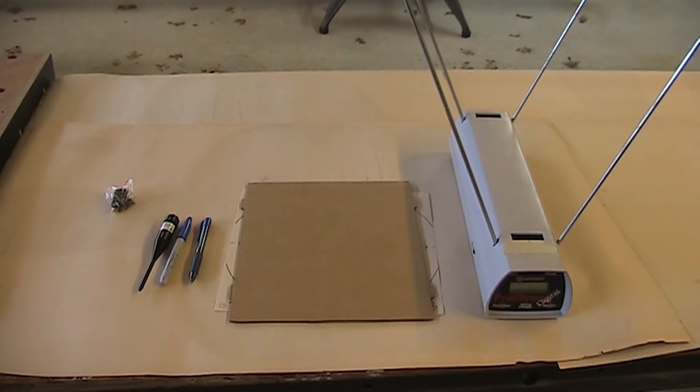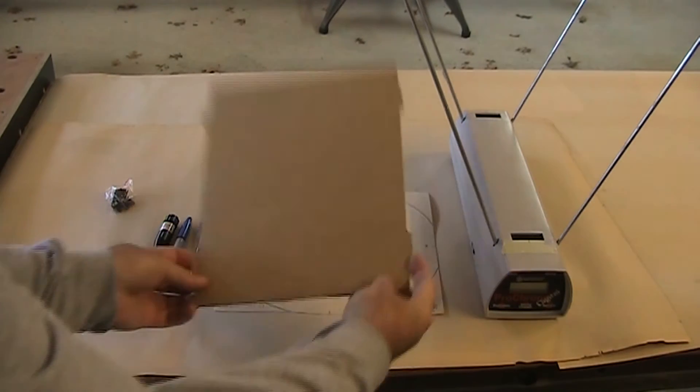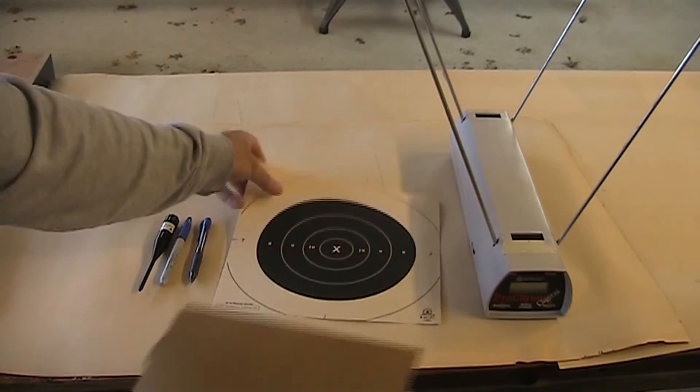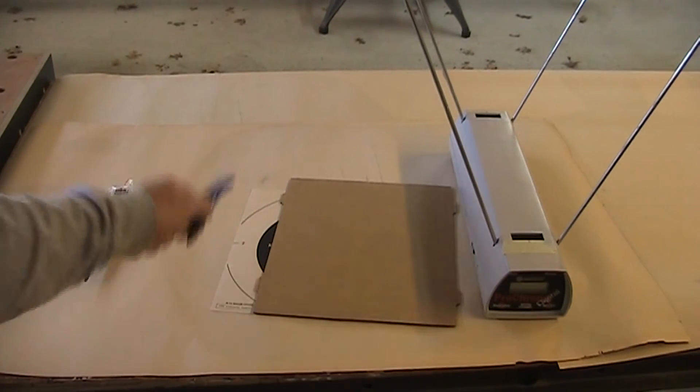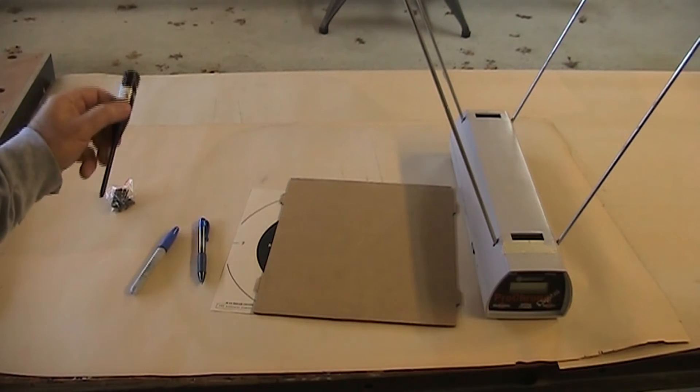Things you're going to need are obviously the chronograph, something to write on, a piece of cardboard, even a target in a pinch, a pen or a sharpie, something like that, and a laser bore sighter.